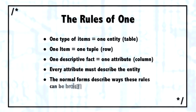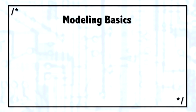If you follow these three rules of one—meaning one type of item, one entity; one item, one tuple; one fact, one attribute—you will always be normalized. Some key terms used throughout database modeling.